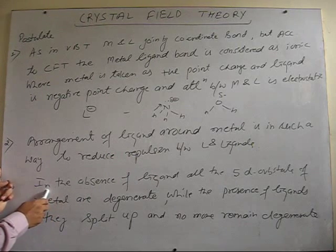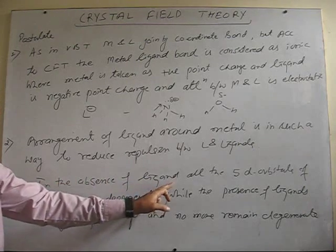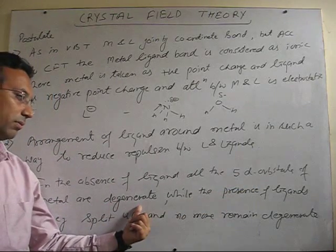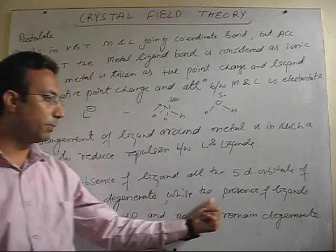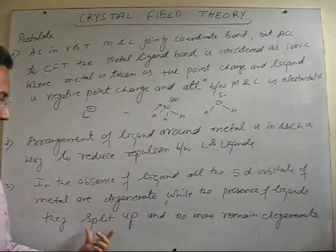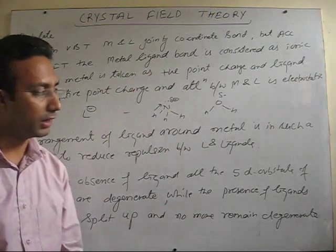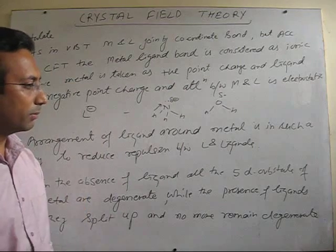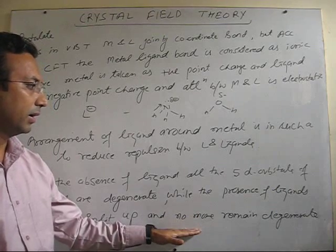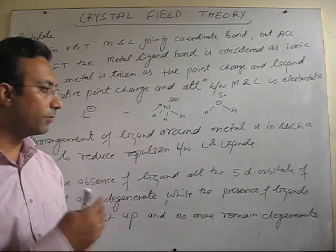The major point given by this theory is that in the absence of ligand, all 5 d orbitals of the metal are degenerate — meaning of the same energy. But in the presence of ligand, when the ligand approaches slowly to the metal, these orbitals of the same energy are split up and they form two different energy levels. This splitting is the basic cause of the color of the complexes, and this point is very well accepted by the theory.